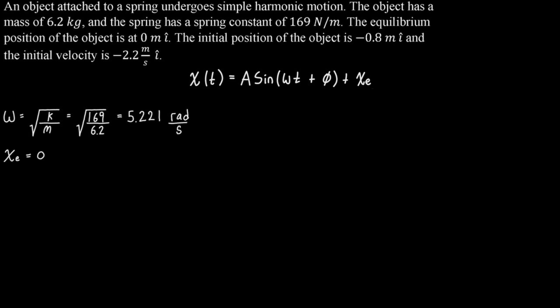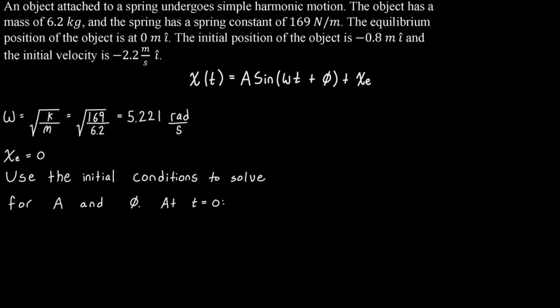We also know that our equilibrium position equals zero, as given in the problem. Now we can use the initial conditions to solve for the amplitude and the phase shift. This question is the worst case scenario where neither the initial position nor the initial velocity is zero. If either one were zero it would make it a little easier to solve for these constants, but since both are non-zero it's going to be a little bit harder.